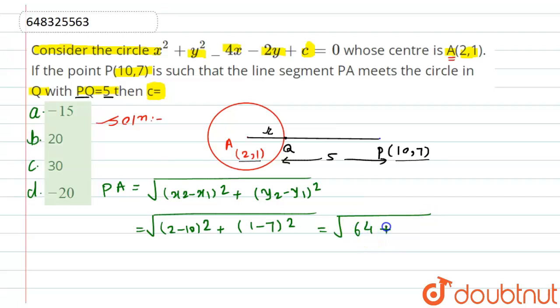It will be 8 squared, that is 64, plus minus 6 squared, which is 36. This equals the root of 100, which is 10. So the complete length of PA we got here is 10.